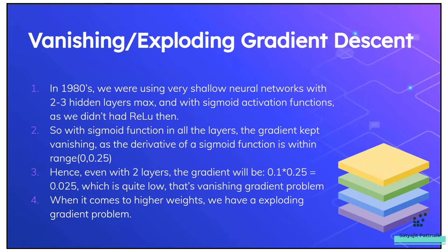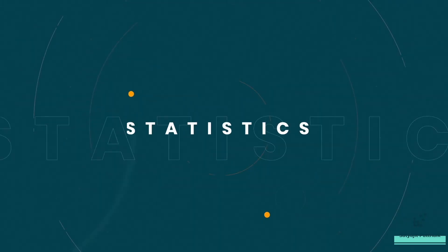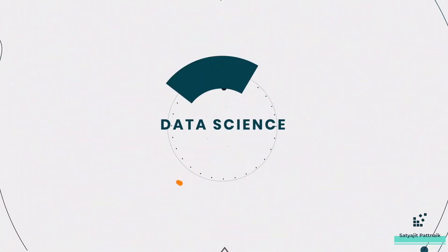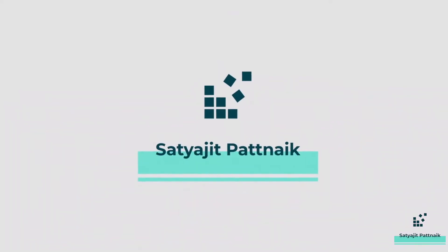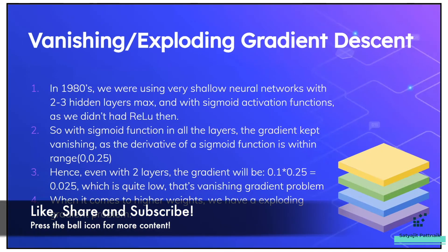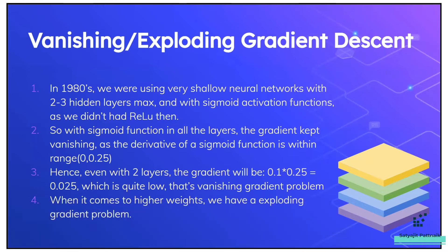In our next topic, we'll learn about what is vanishing and exploding gradient problem. Before learning about that, these are basically two important problems which occur in neural networks. Why they occur and why ReLU was introduced — we shall be learning each one of them sequentially.